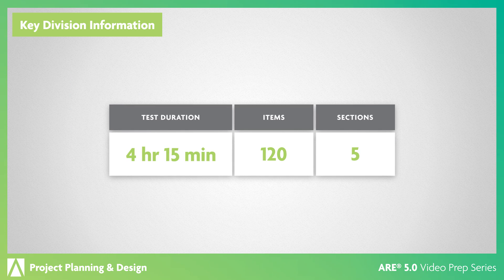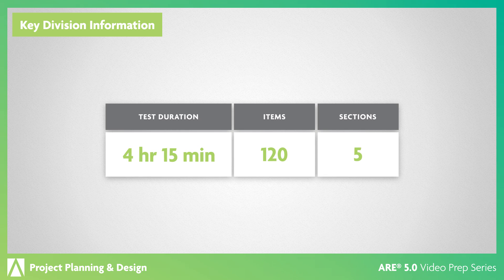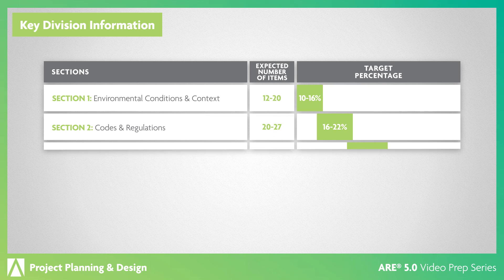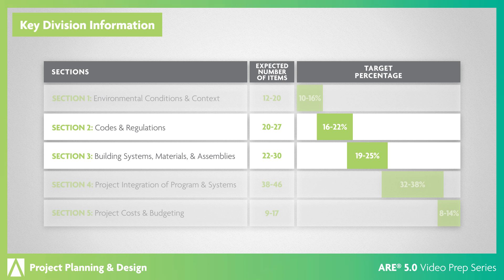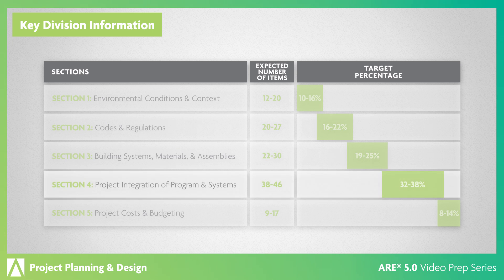You'll have 4 hours and 15 minutes to answer 120 items in this division. The content is distributed between two small sections on environmental conditions and context, projects, and project costs and budgeting; two larger sections on codes and regulations, and building systems, materials, and assemblies; and a large section on project integration of program and systems.